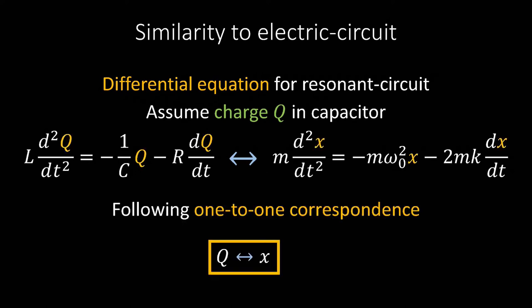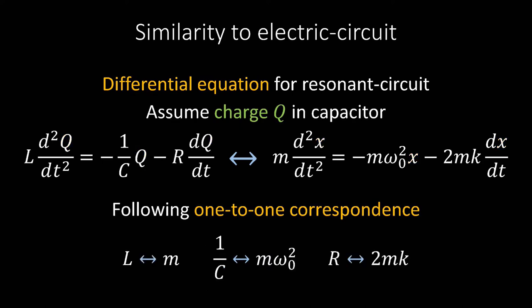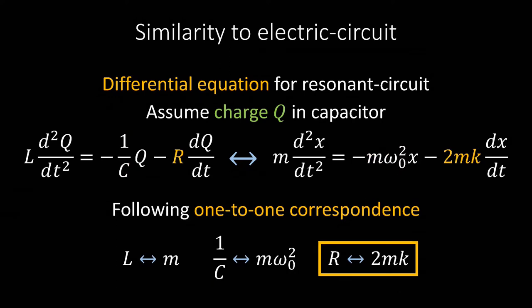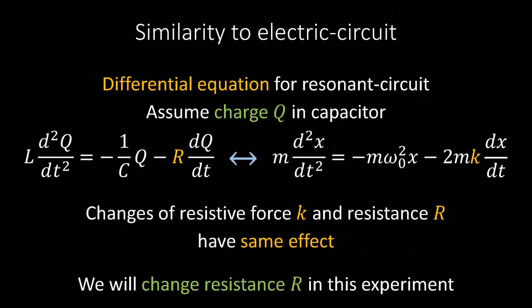Replace the charge q with the position x. Replace the inductance of the coil L by the mass m. Replace the C-inverse by mω₀ squared. Replace the electrical resistance R by the magnitude of the resistive force 2mk, and you have Newton's equation of motion. Changing the resistive force magnitude k and changing the electrical resistance R have the same effect. In this experiment, the resistance R will be variable.